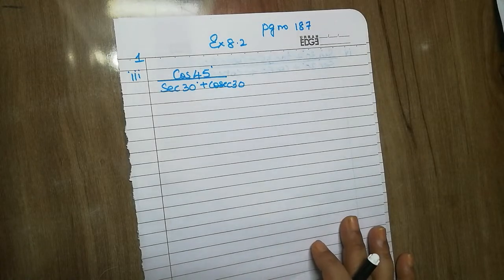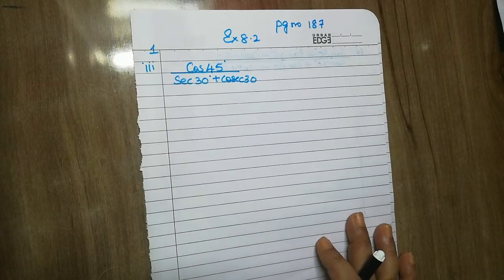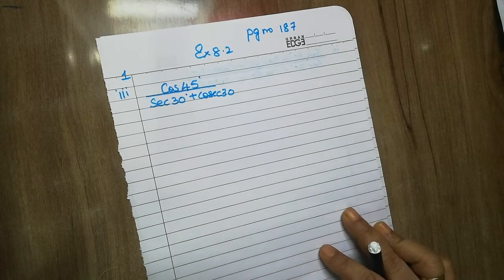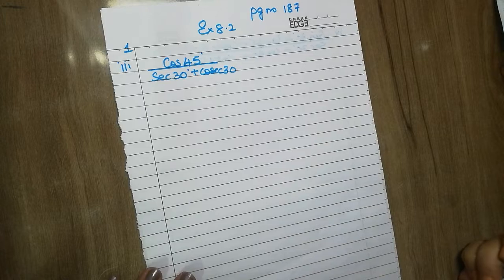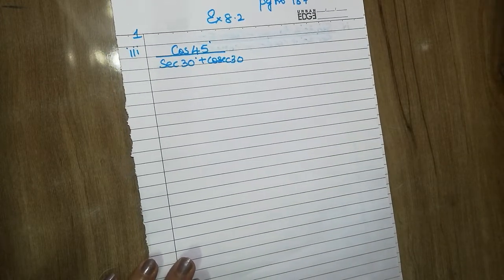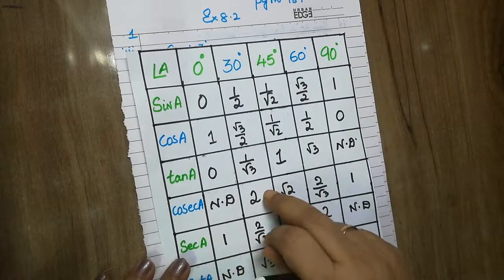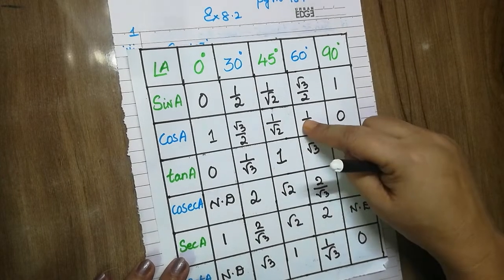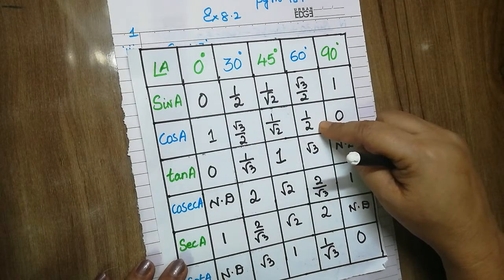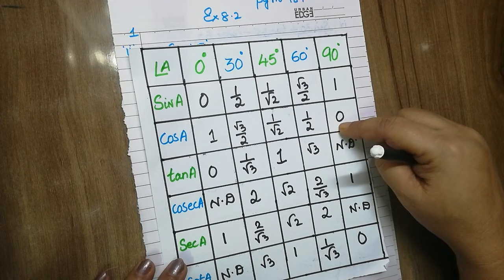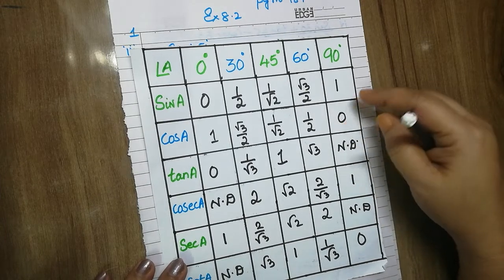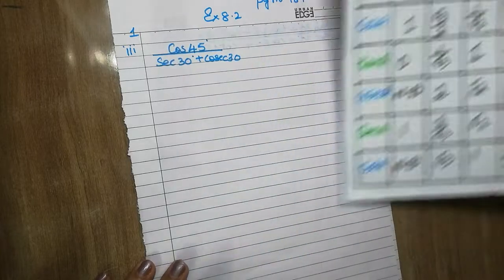Hello children, today we will do Exercise 8.2, page number 187 in the CRT textbook — the first main, third, fourth and fifth sums. To work out these, we need the table which I taught you in the previous video. The link for that video will be given in the comment section. Let us get started.